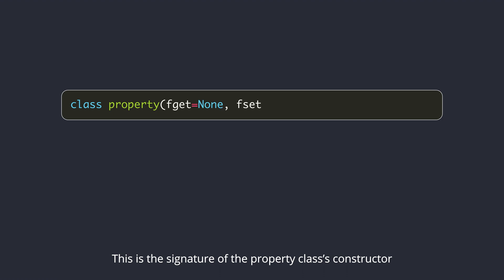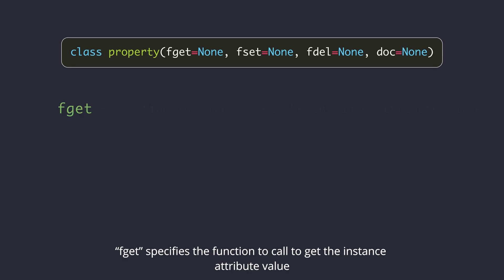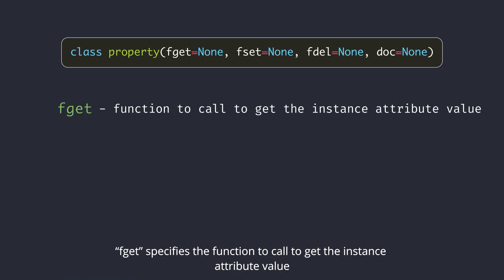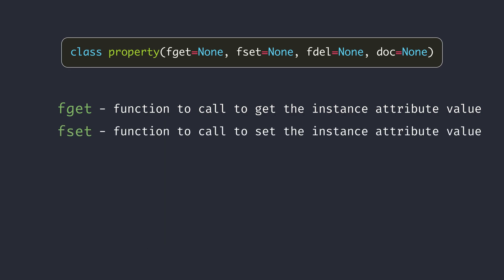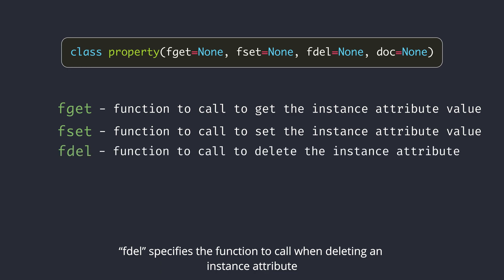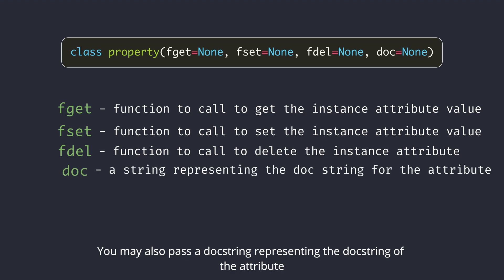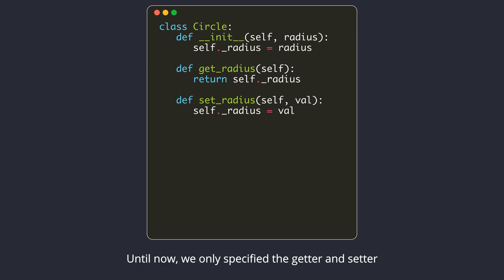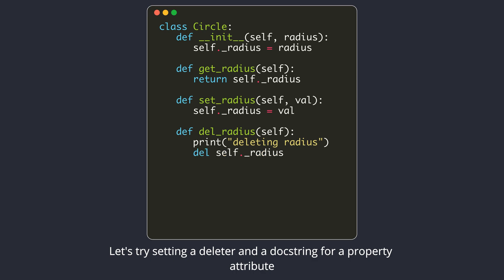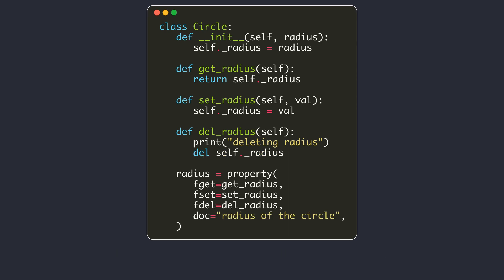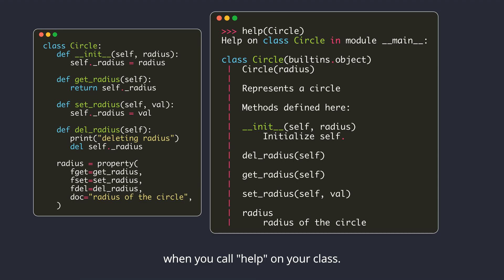This is the signature of the property class's constructor. It accepts four optional arguments. fget specifies the function to call to get the instance attribute value. fset specifies the function to call to set a new value on the instance attribute. fdel specifies the function to call when deleting an instance attribute. You may also pass a docstring representing the docstring of the attribute. Until now, we only specified the getter and setter. Let's try setting a deleter and a docstring for a property attribute. The string you specify will be displayed as help text for the corresponding attribute when you call help on your class.